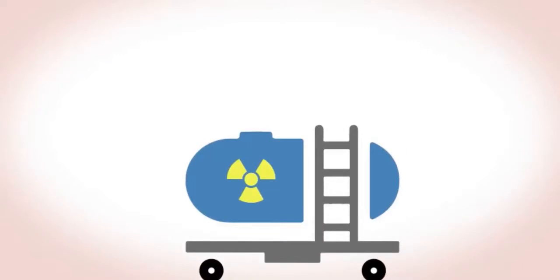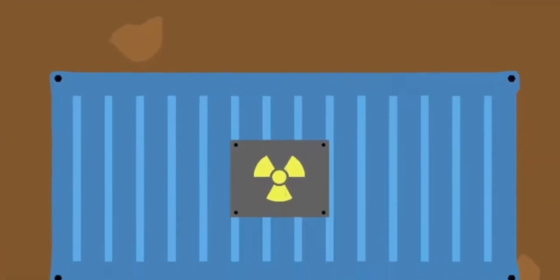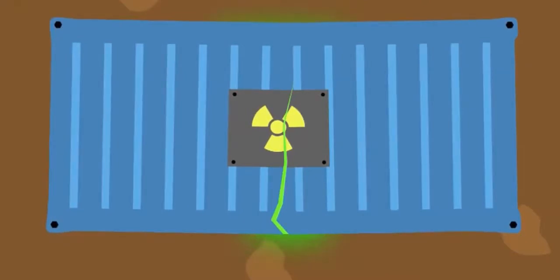Radioactive waste is normally stored above ground in water tanks waiting for more permanent underground storage, where it has to be safe for millions of years. There are fears that these underground stores could fail and contaminate watercourses.